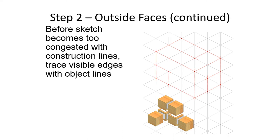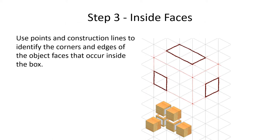And remember, we're using nice construction lines. So it says before sketch becomes too congested with construction lines, trace visible edges with the object lines. So they recommend drawing the object lines before drawing what's happening inside because they know things are about to get crazy. You're going to draw a lot of construction lines. That's a good tip. You can do that to keep you grounded.